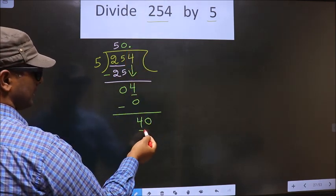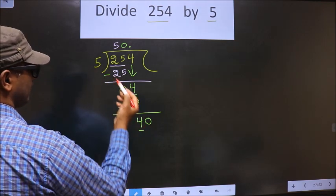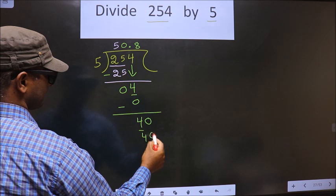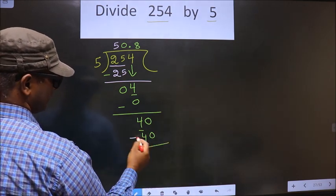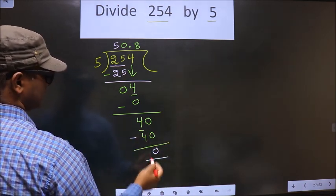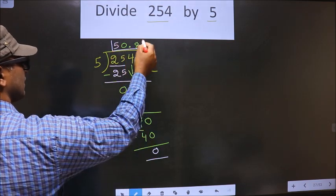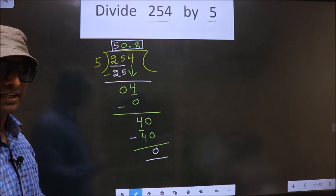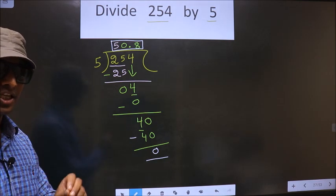Now here we have 40. When do we get 40 in five table? 5 eights 40. Now you subtract, you get 0. So this is our quotient.